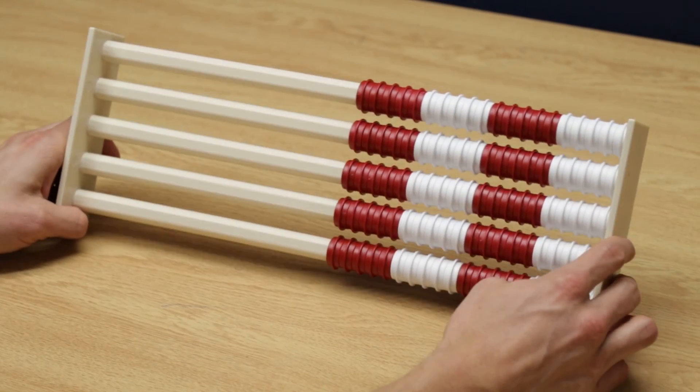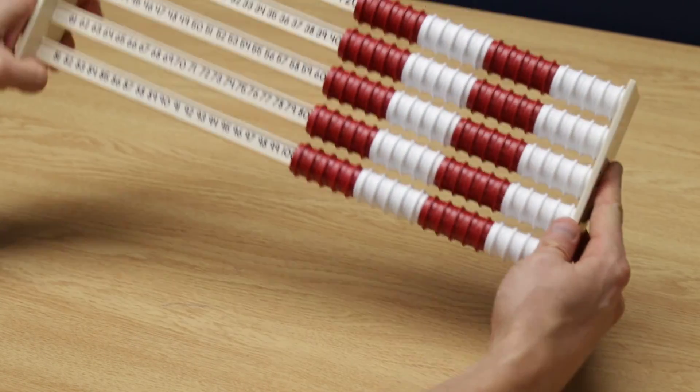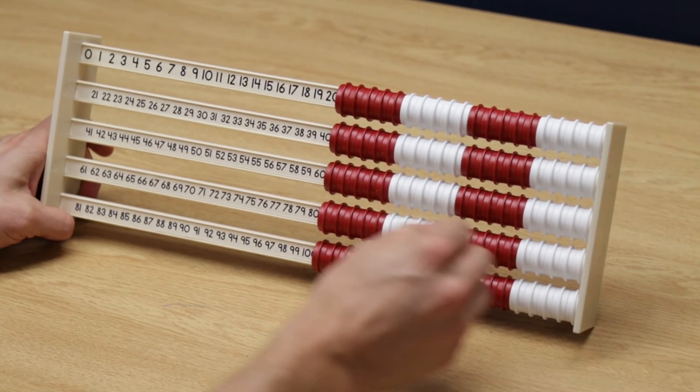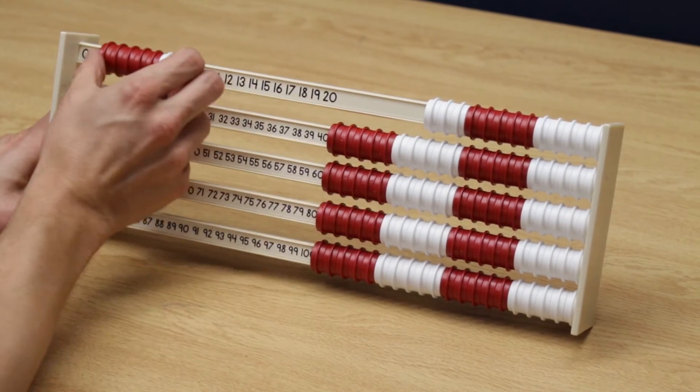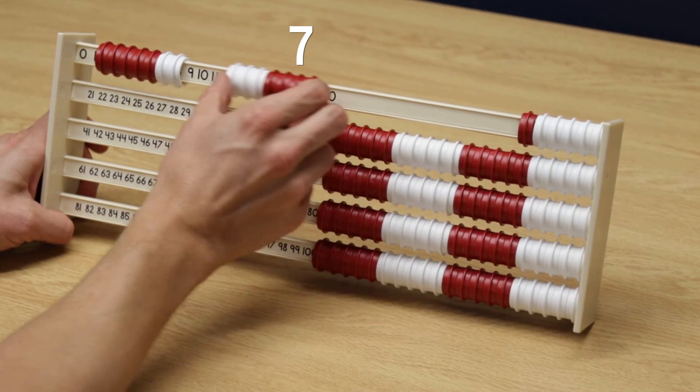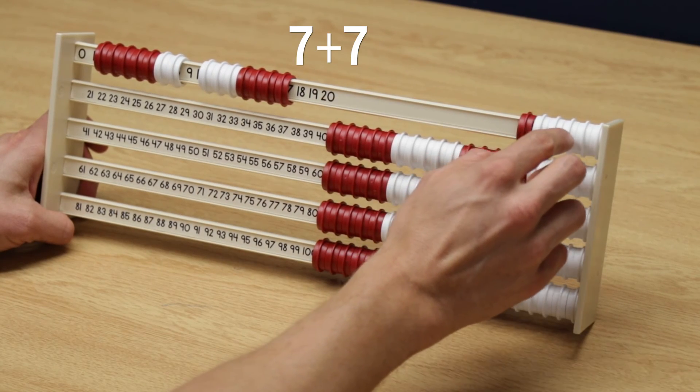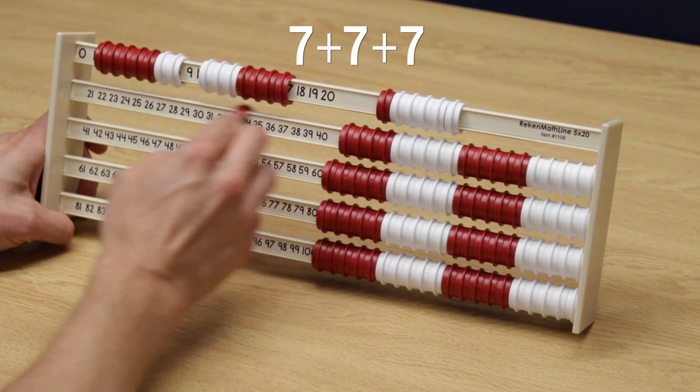Now, for 4x7 as a procedure is four groups of 7. We have one group of 7, two groups of 7, [counting one through six], three groups of 7...